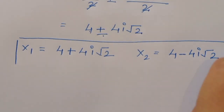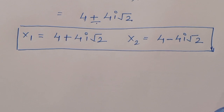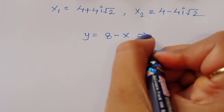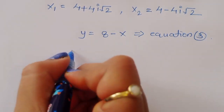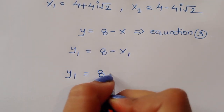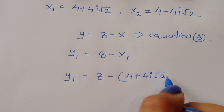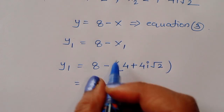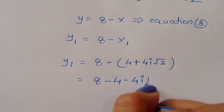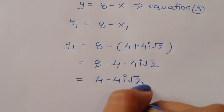Now we find the values of y1 and y2. Using equation 3, y equals 8 minus x. So y1 equals 8 minus x1 equals 8 minus (4 plus 4i square root of 2), which equals 4 minus 4i square root of 2. That is the value of y1.